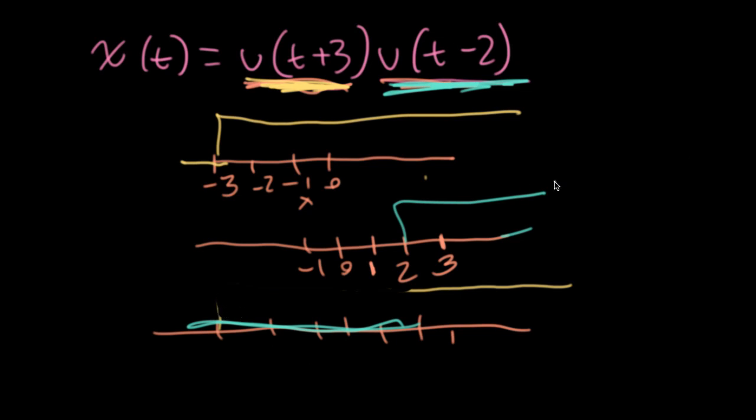So if I look at something like this, well, this is really equal to u of t minus two. This is really a red herring.